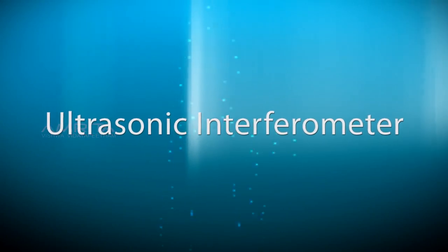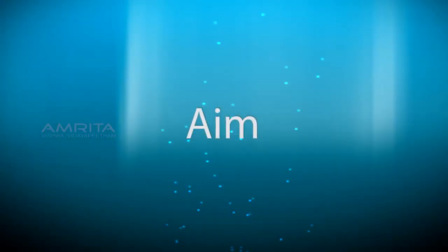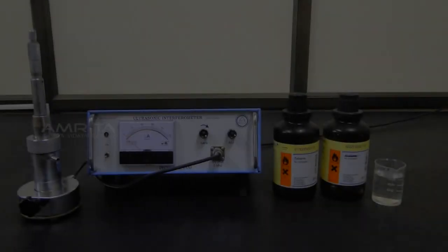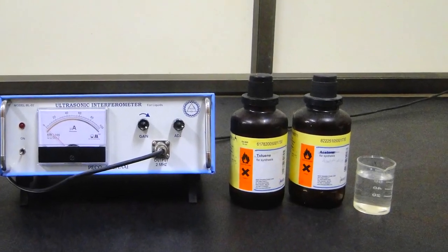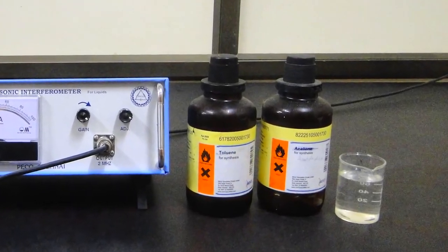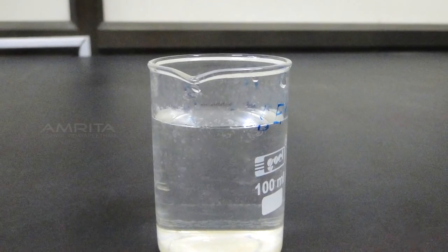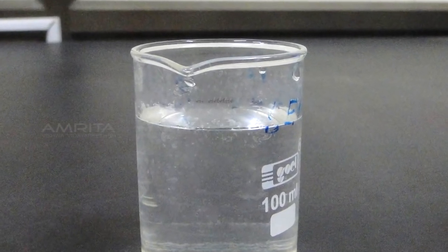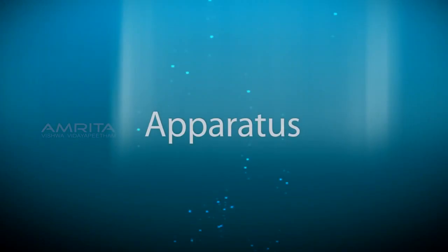Ultrasonic interferometer: aim to calculate the velocity of ultrasonic sound through different liquid mediums, and second, to calculate the adiabatic compressibility of the given liquid. Apparatus: